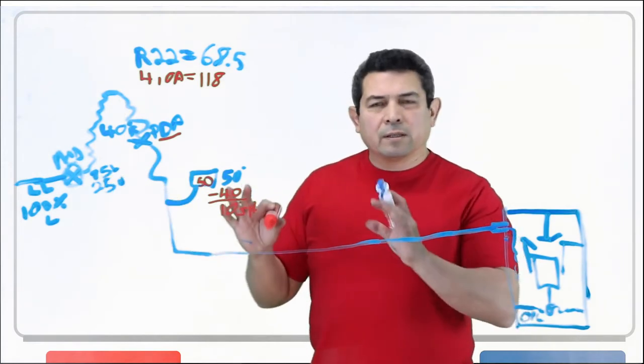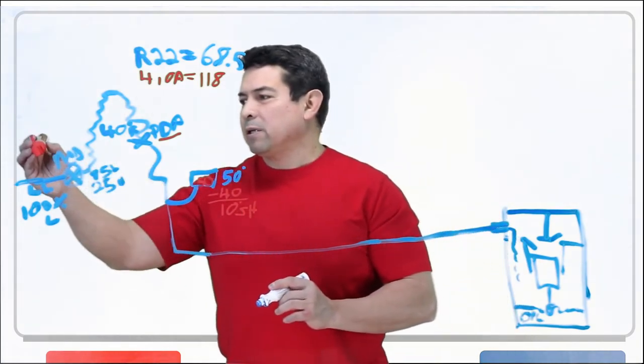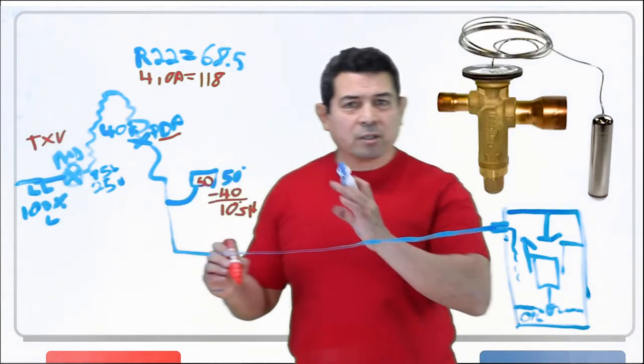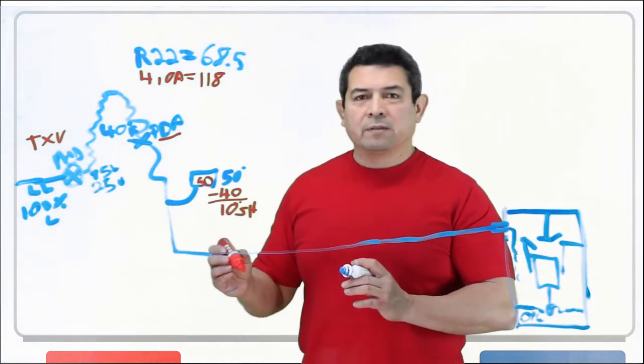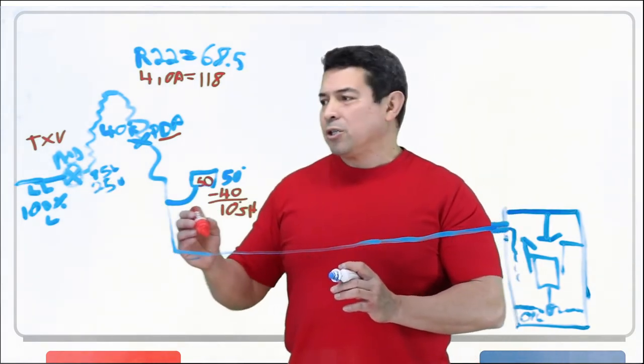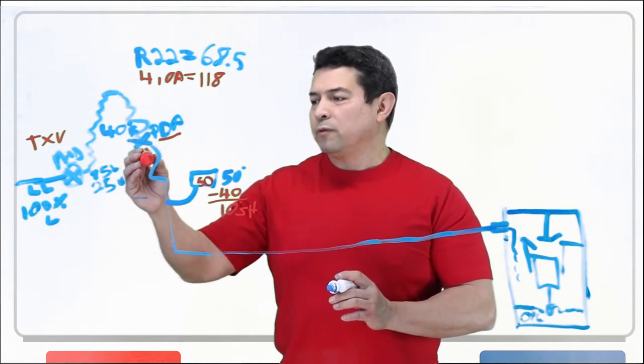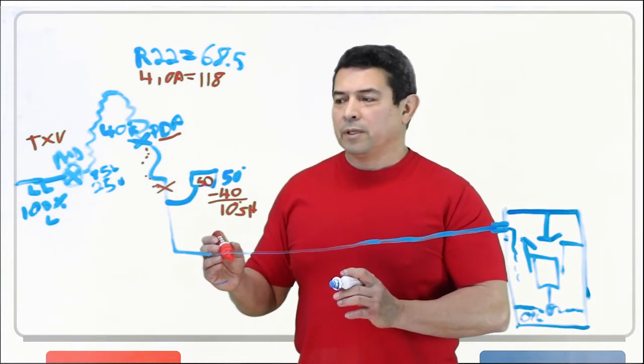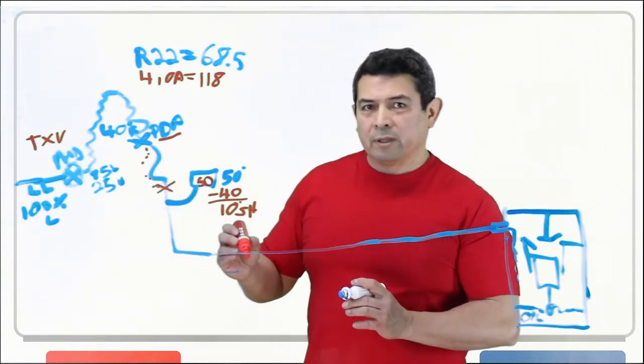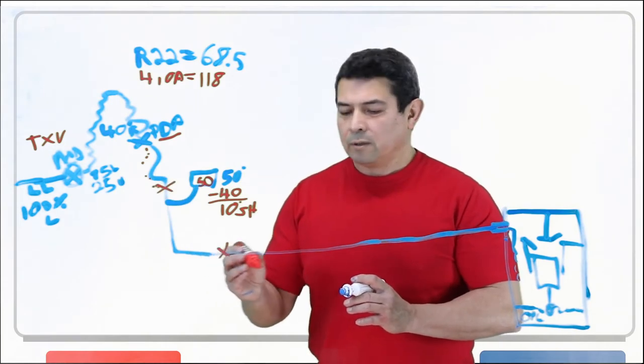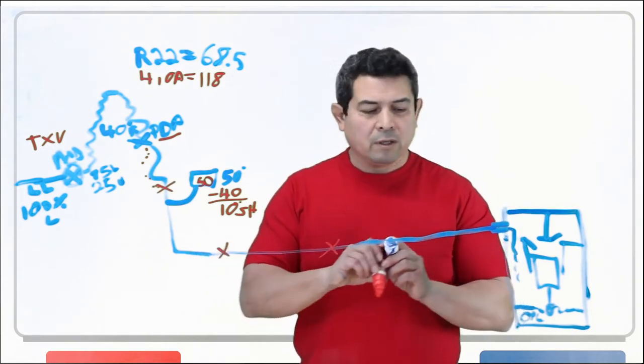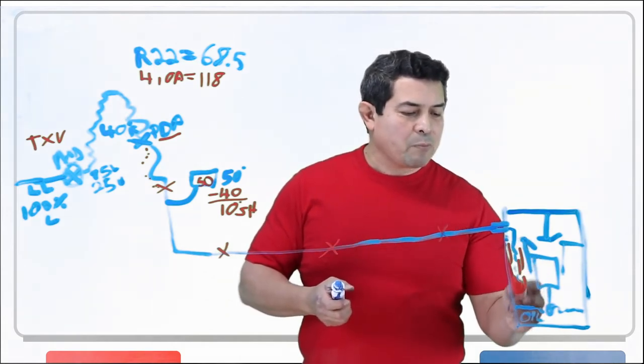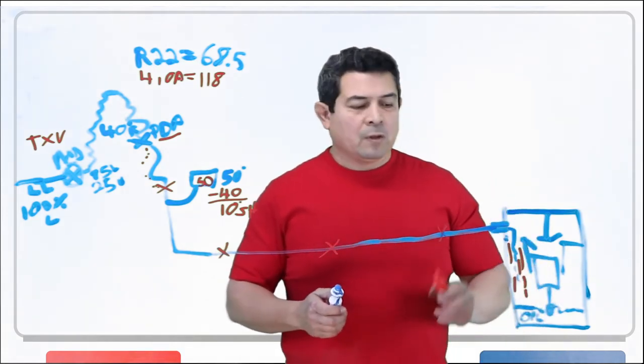If the metering device, let's say that this metering device happens to be a TXV and it's not adjusted properly, there's an adjustment at the bottom of the TXV. If it's not adjusted properly, this predetermined point will move down to here. Well, guess what? If it's really out of adjustment, it may move to here. It may move to here. It may move to here until eventually we have liquid coming back to my compressor.